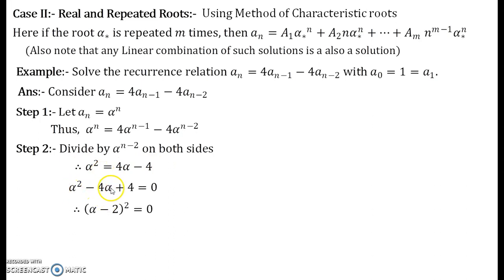You will get α² minus 4α plus 4 equals to 0 and this is a quadratic and once you solve this quadratic you get (α - 2)² equals to 0 which is nothing but α equal to 2 comma 2.